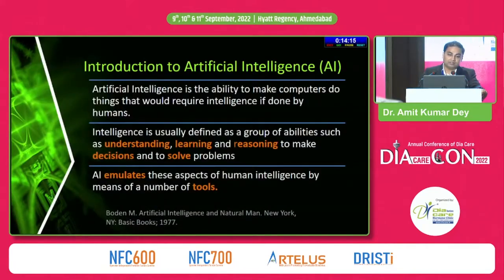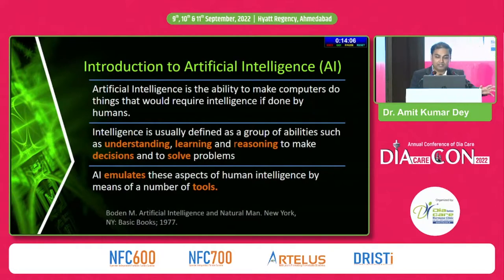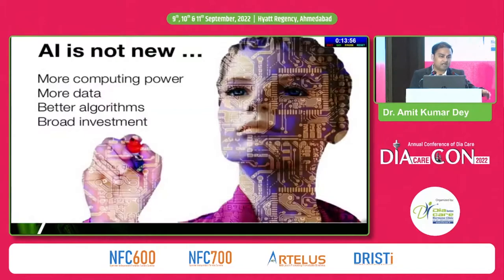Artificial intelligence is the ability to make computers do things that would require intelligence if done by humans — understanding, learning, reasoning to make decisions and solve problems with decision-making tools. AI is not new; it means more computing power, more data, better algorithms, and it definitely requires broad investment.